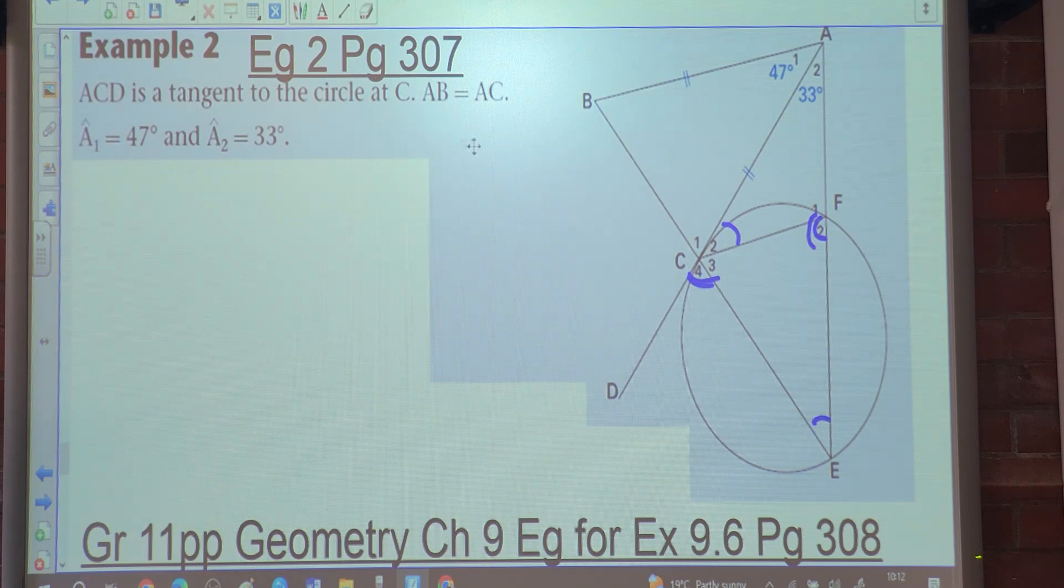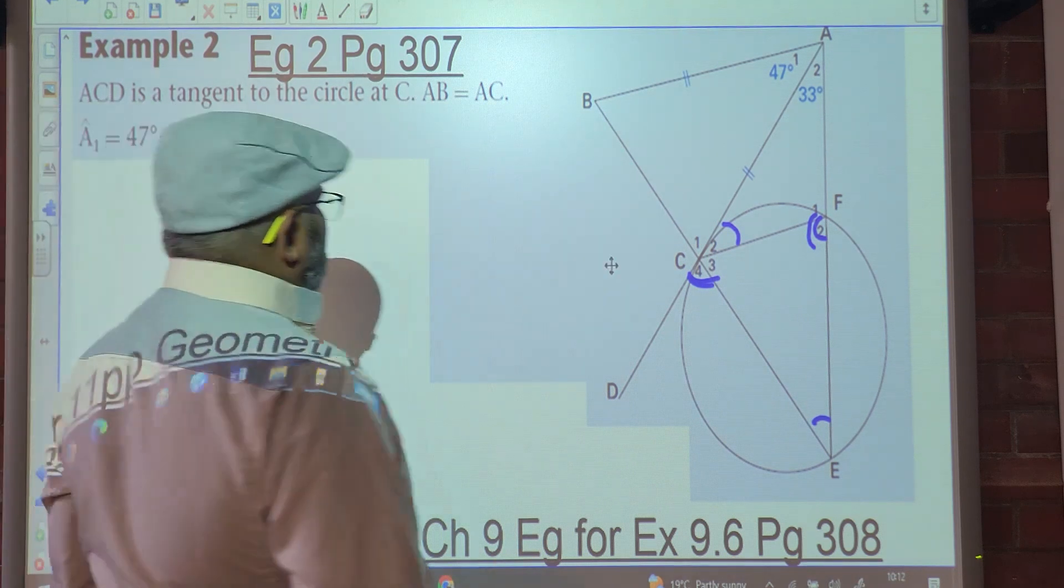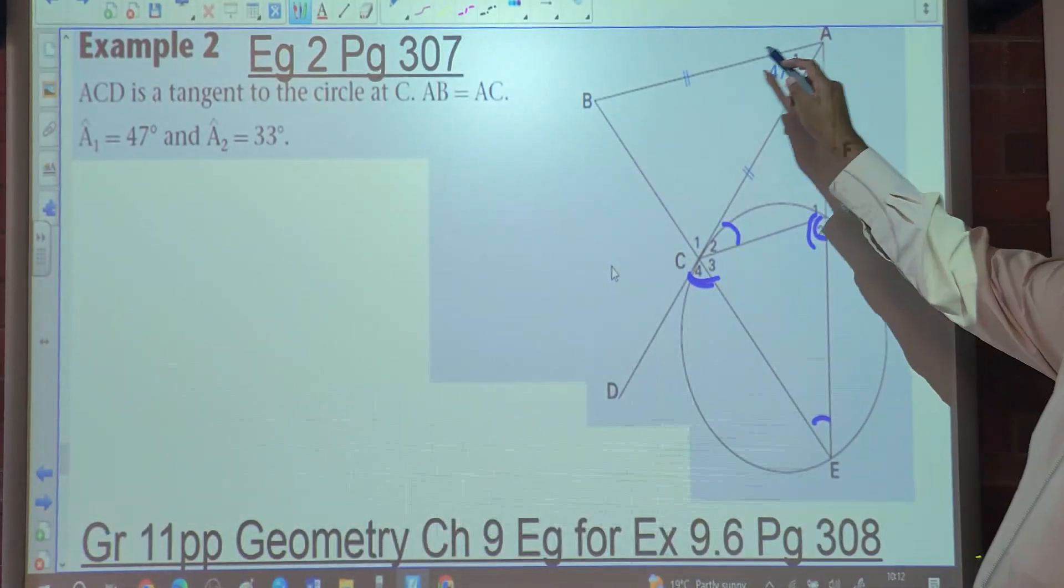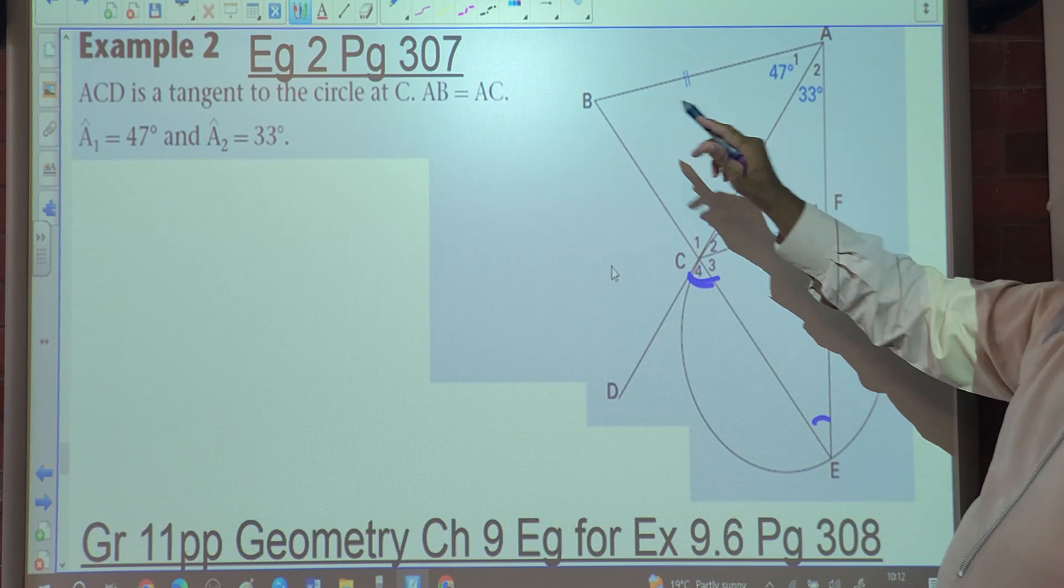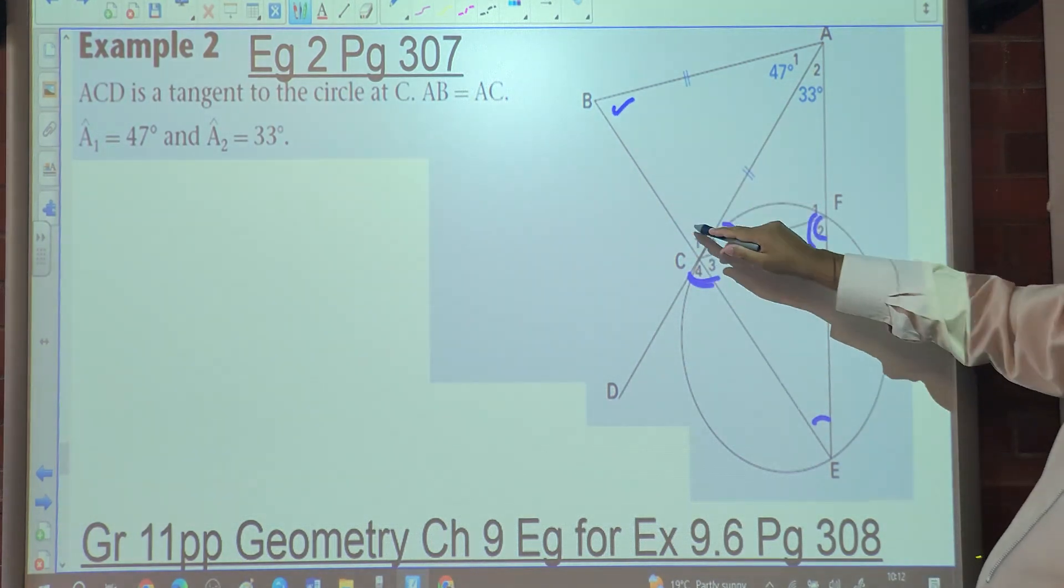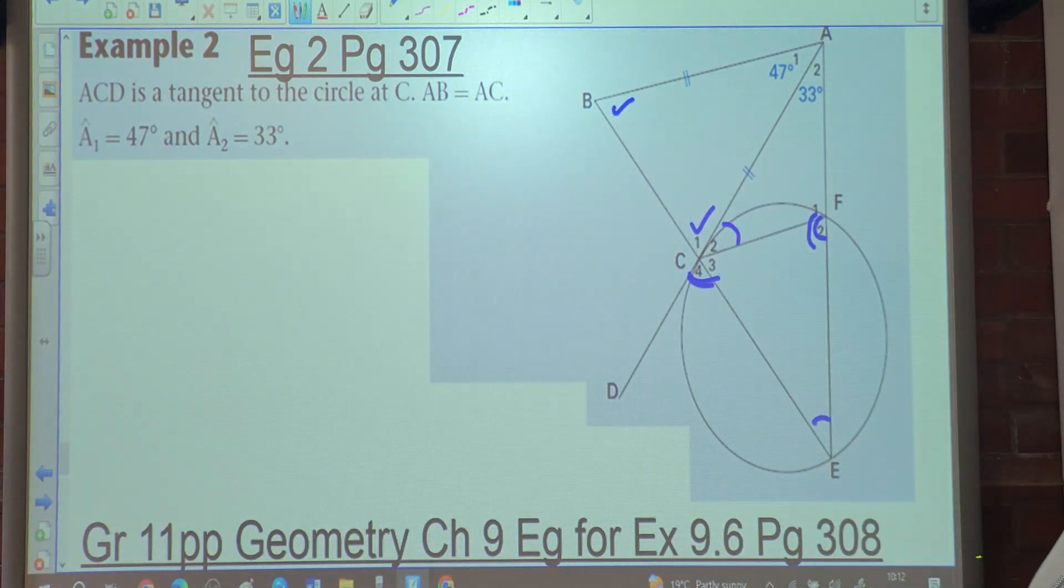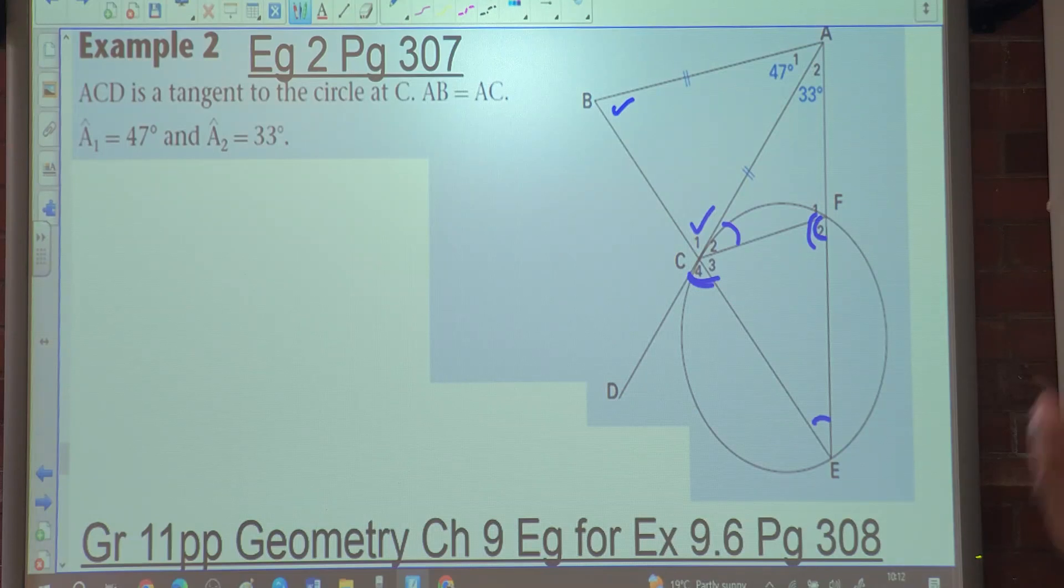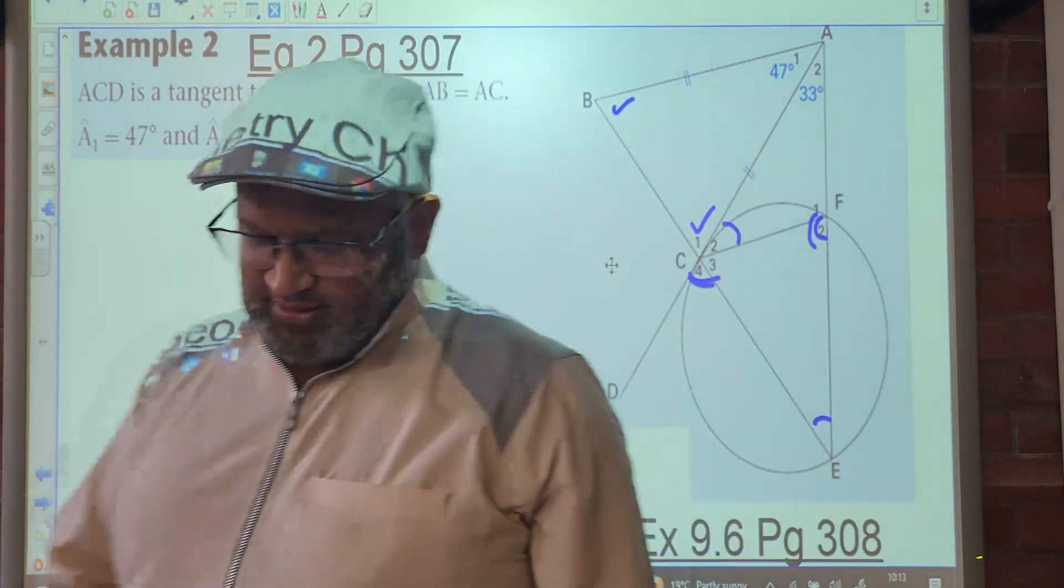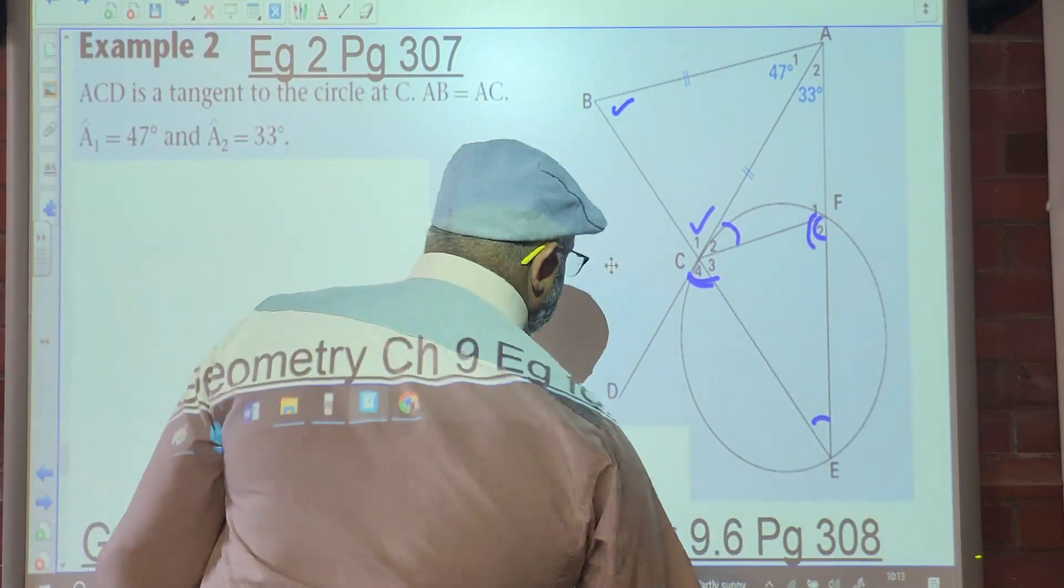Then you are told that AB is equal to AC. People, if that's the case, what do we know? The angle B is equal to angle C1, angles opposite equal sides. Then we are told that angle A1 is 47 degrees, A2 is 33 degrees. So we can calculate basically all these angles here. We've got enough information. But let's see what they ask us. With that in mind, let's answer the equation.